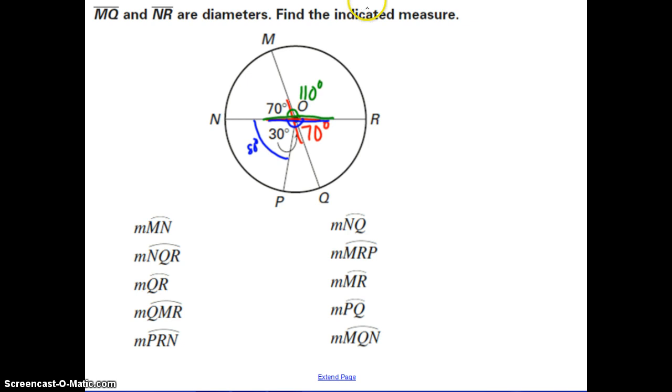Now the last step before we can start answering is we need to use that theorem about how a central angle is the same as its intercepted arc. So if this is 110, this arc is 110, this angle is 70, this arc is 70, this is 30, so this is 30, 80, and lastly 70 again. This makes it a lot easier, because when we're trying to answer these questions, now we can just add what we need, MN, from M to N, this is 70 degrees.